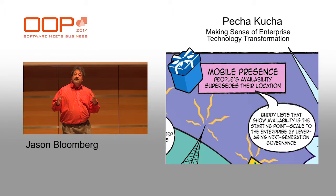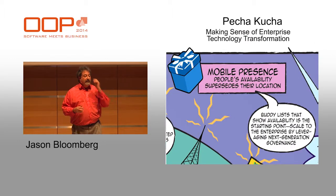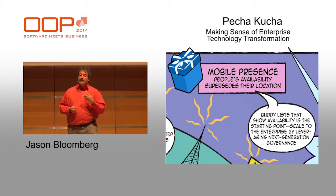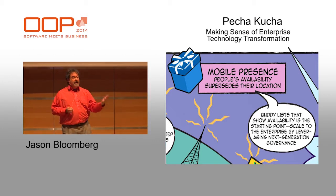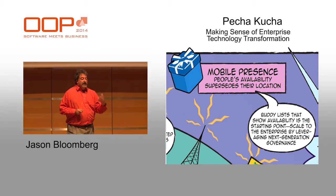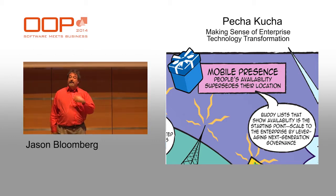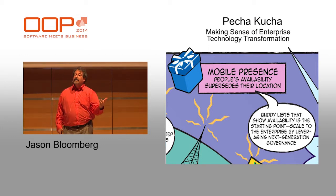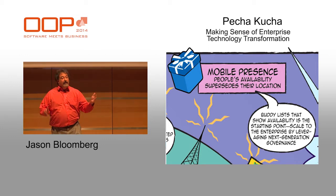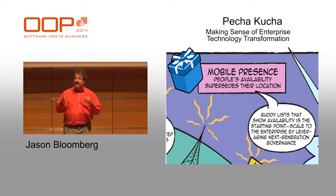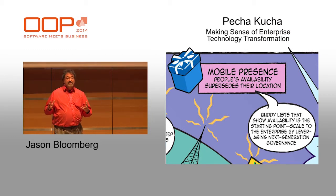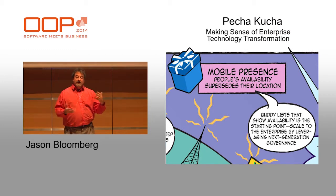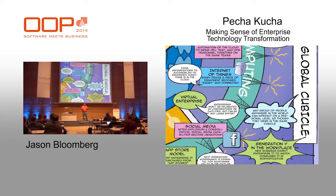Mobile presence is a key part of the story. It's not just about the fact that your phone lets you be anywhere, but it's more about being available or not available — essentially the buddy list principle. If you're familiar with BASE transactionality, the S stands for soft state, which is essentially the buddy list principle, and this is becoming more important.